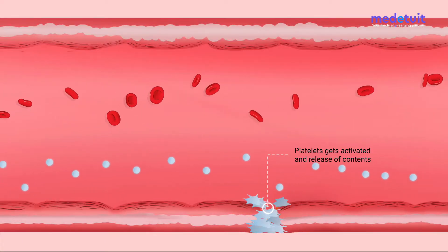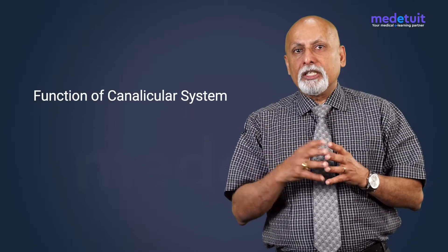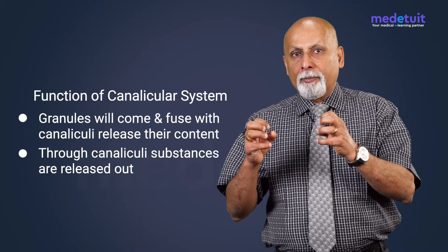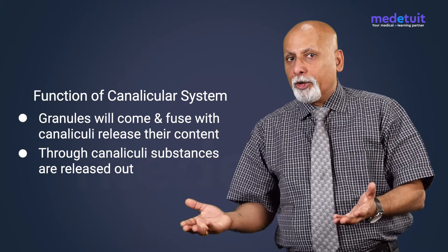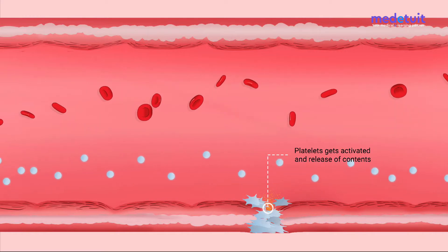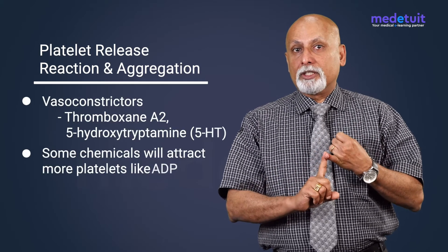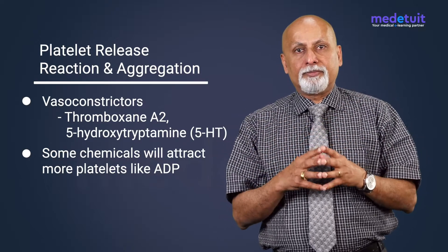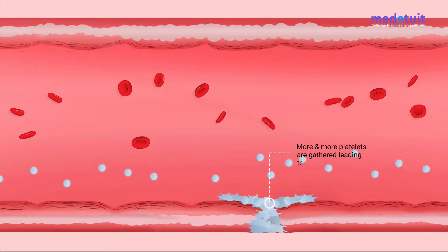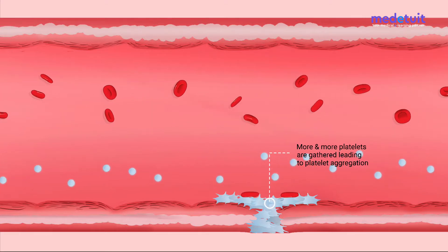After activation, the stored substances in the granules get released. The platelets are traversed by a canalicular system in the cytoplasm — the granules fuse with the canaliculi, release their content, and through the canaliculi the substances are released out. In the video you can see chemicals coming out from the platelets. Some are vasoconstrictors like thromboxane A2 and 5-hydroxytryptamine; others like ADP and platelet-derived growth factors attract more platelets to the area. This process is called platelet aggregation.